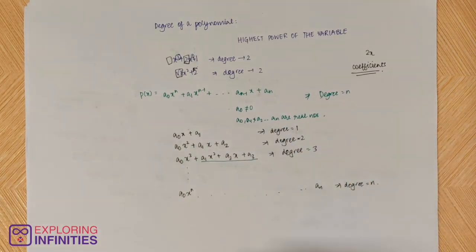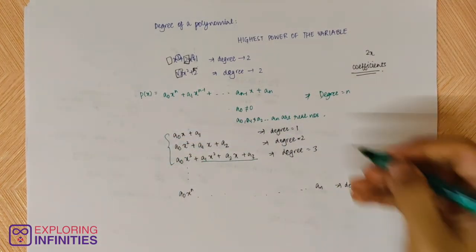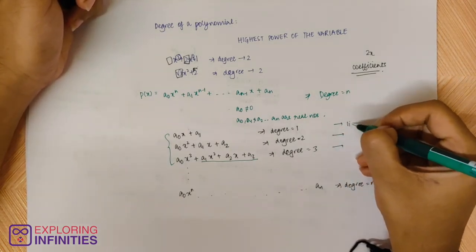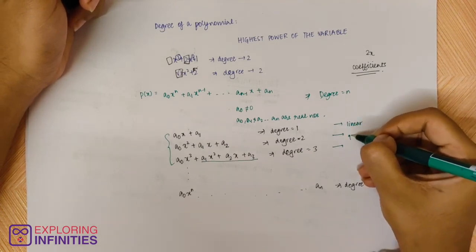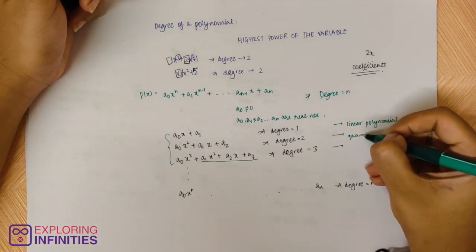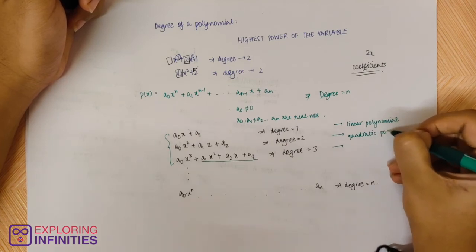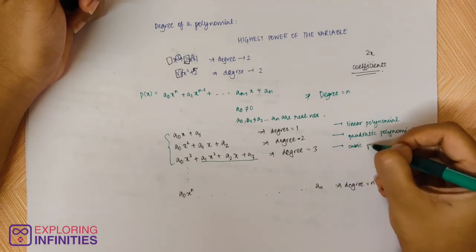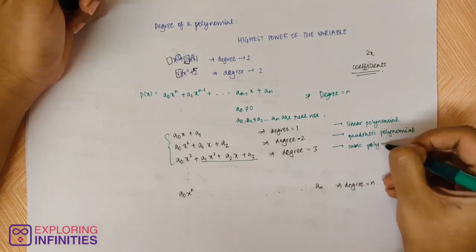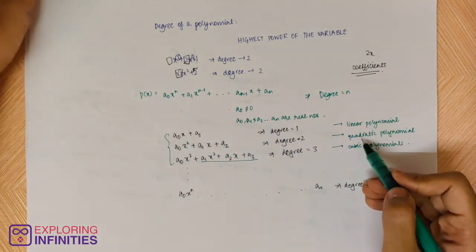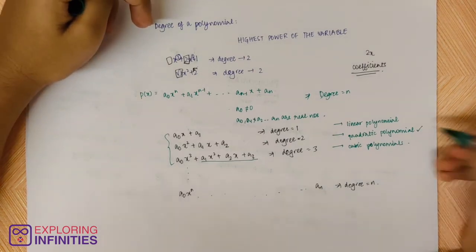So that is like a formula for calculating degree. There's another way to describe these particular equations — they have specific names. A polynomial with degree 1 is called a linear polynomial. A polynomial with degree 2 is called a quadratic polynomial. A polynomial with degree 3 is called a cubic polynomial. You'll learn more about quadratic equations in the coming chapters.